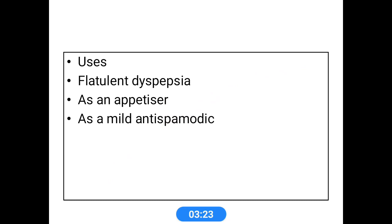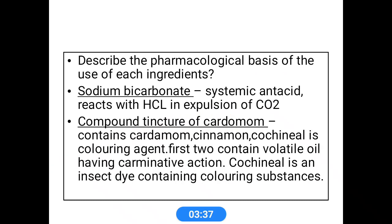The important uses of carminative mixture are: mainly used for flatulence and dyspepsia, and it is also a good appetizer and a mild anti-spasmodic. Next, we look at the actions of each ingredient, which are most important for your viva section.